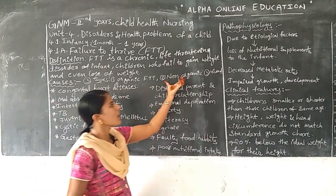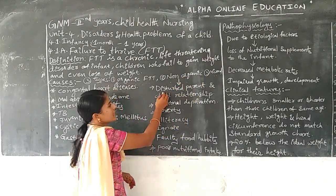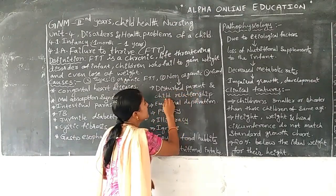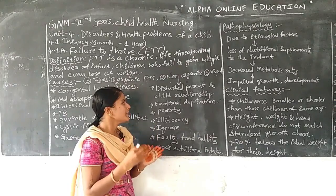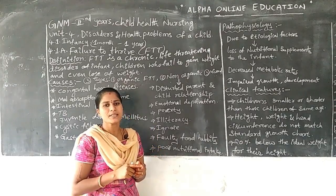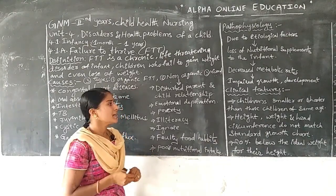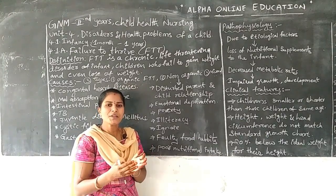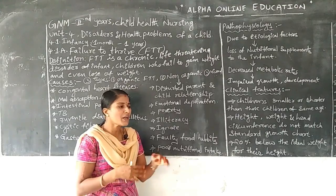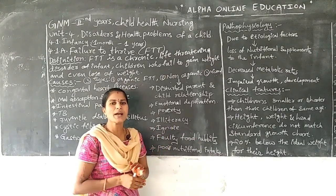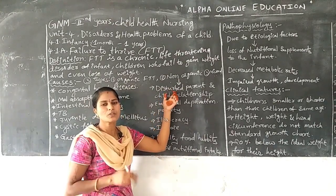Next we are going to discuss about non-organic FTT. Here one problem is the disturbed parent-child relationship. Who are maintaining good interpersonal relationship between the parents, they are providing good love and affection to the infants. When the mother and father have some problems in their daily life, they are not providing good care to the infants. This is one reason for failure of growth of an infant.